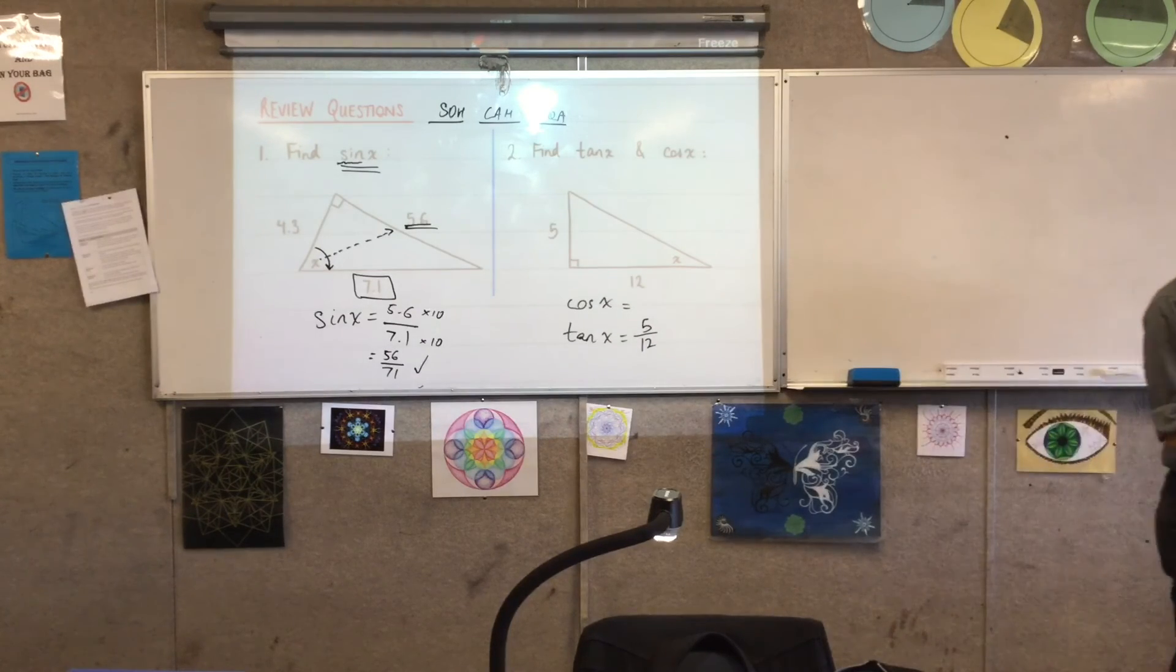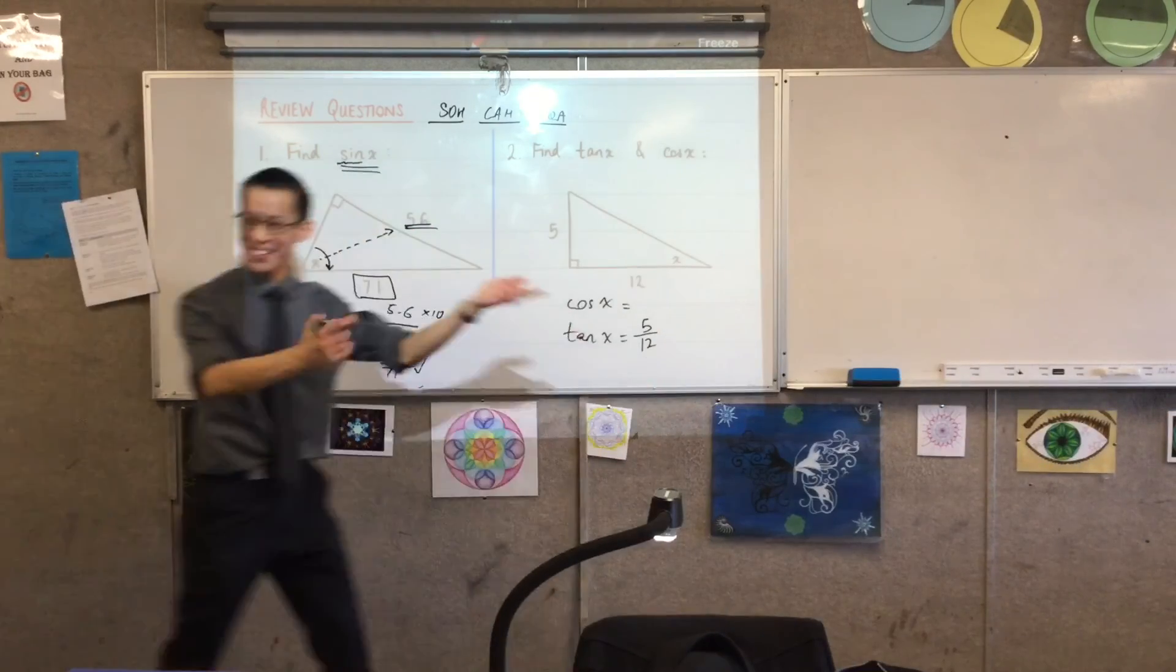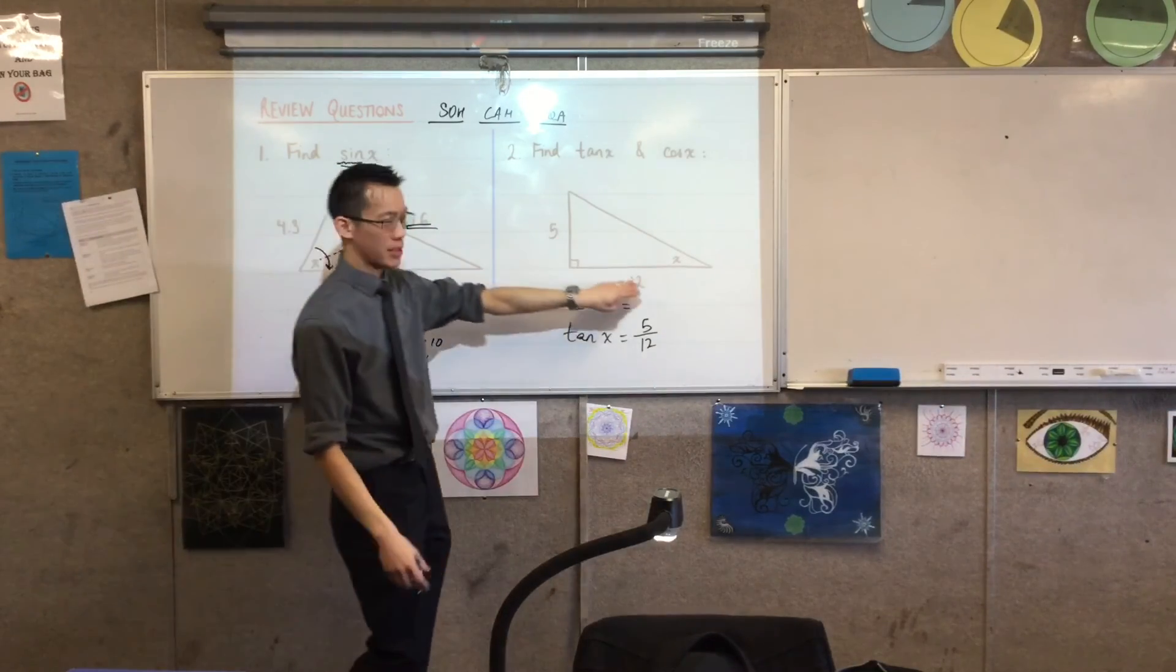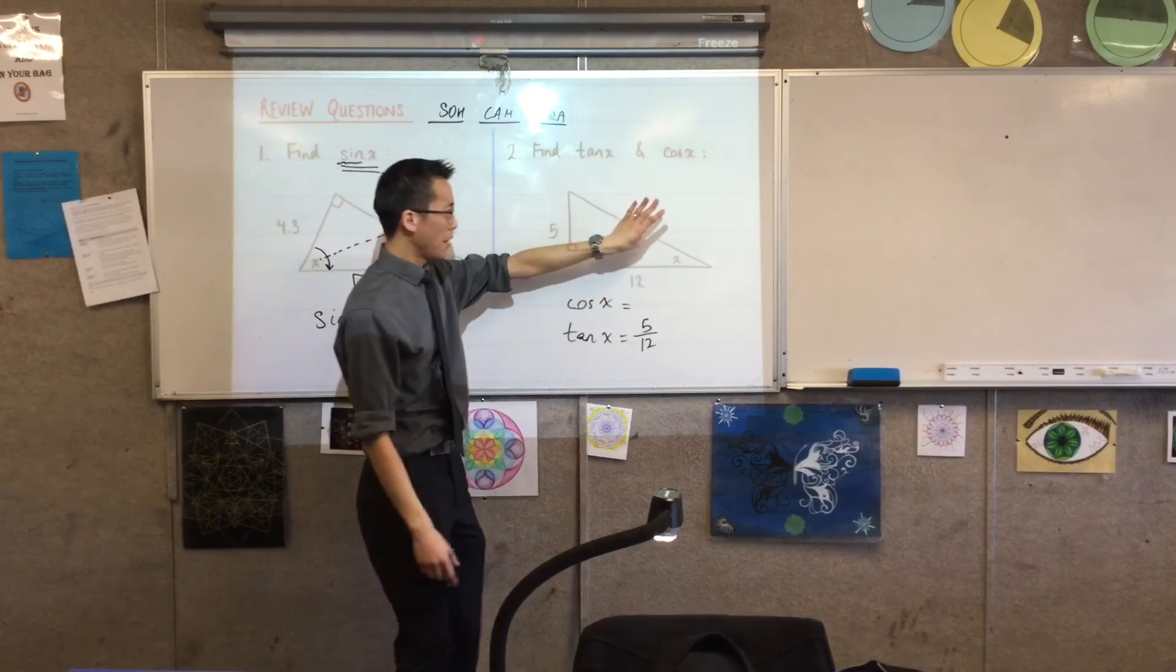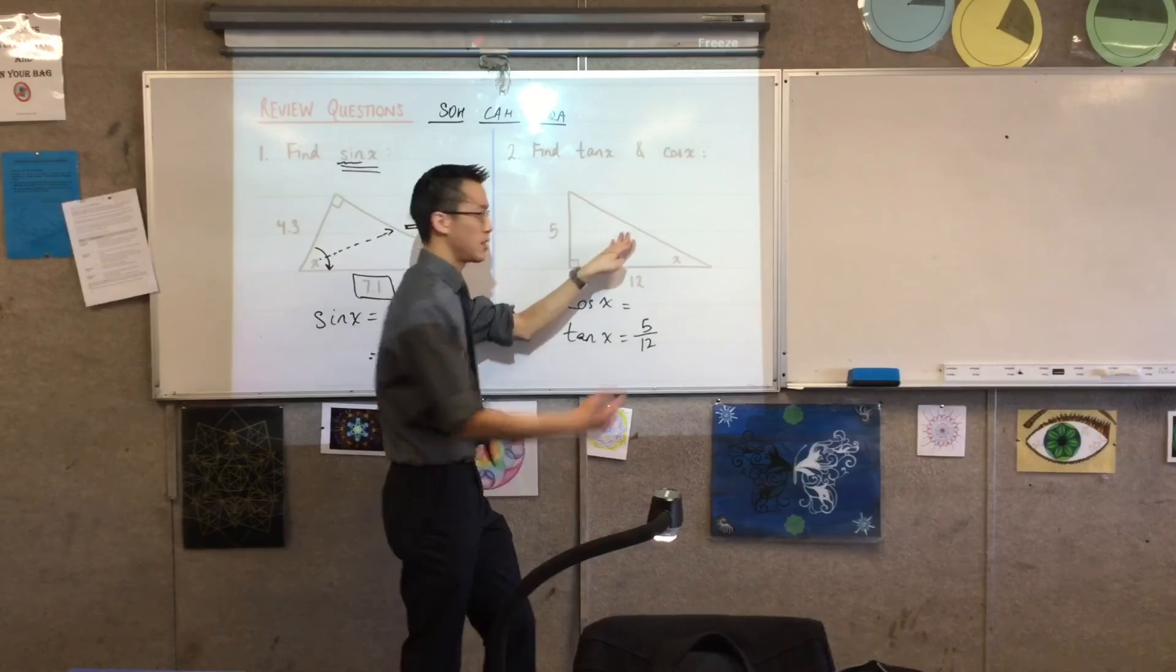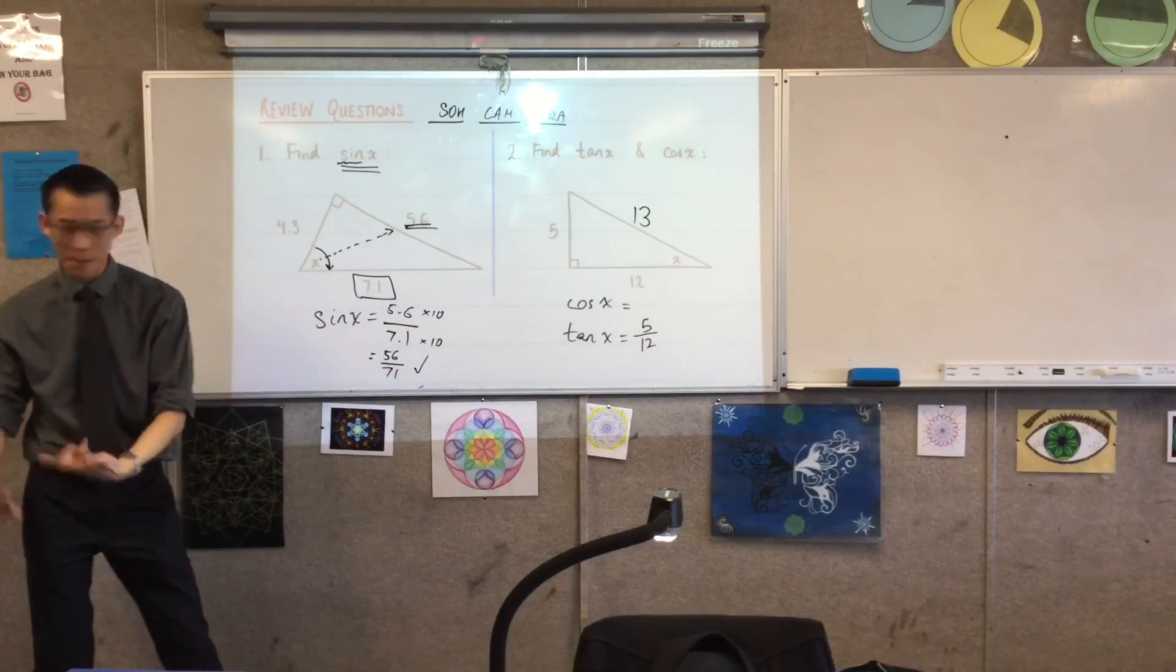But to get cosine, to get cos of x, you can see from our acronym, our mnemonic, we need adjacent and hypotenuse, but I don't know what the hypotenuse is. So what am I going to do? Pythagoras. So this is why we had a Pythagoras assignment. 5 squared plus 12 squared, that's 25 plus 144. That means this is the square root of 169. It should give you 13. So once you know the hypotenuse...